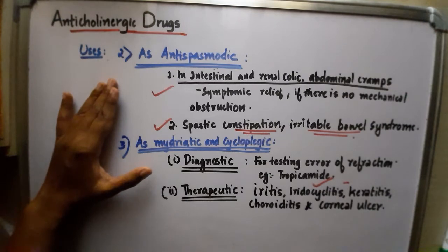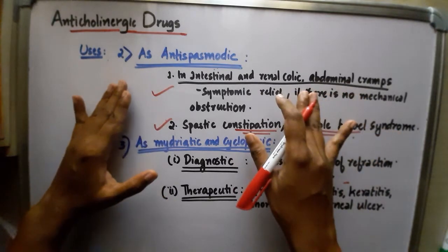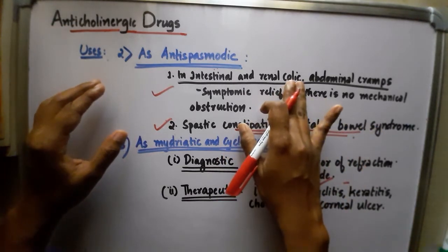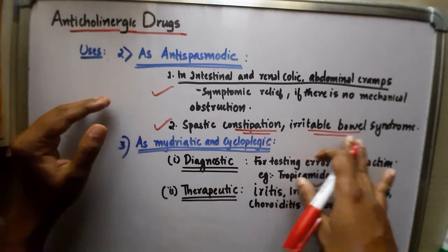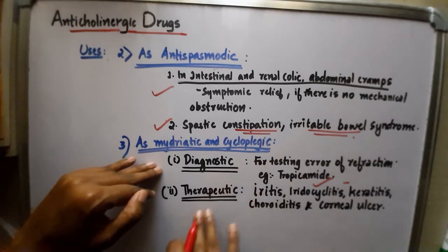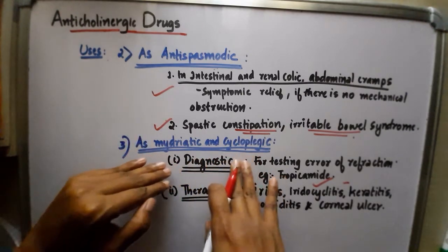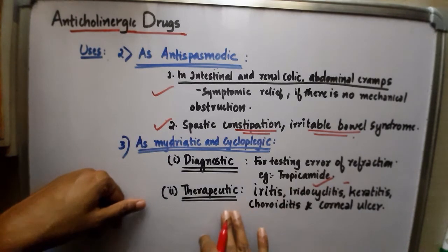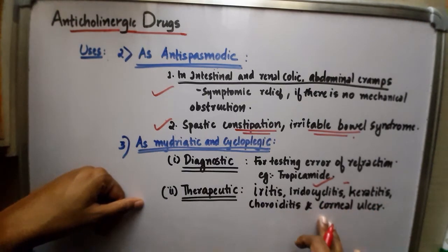Anticholinergic drugs are used as antispasmodics in intestinal and renal colic, and abdominal cramps, to provide symptomatic relief where there is no mechanical obstruction. They are also used as antispasmodics to treat spastic constipation and irritable bowel syndrome. As mydriatics and cycloplegics, they are used for diagnostic purposes such as testing errors of refraction — the drug used is tropicamide — and therapeutically to treat iritis, choroiditis, iridocyclitis, keratitis, and corneal ulcer.